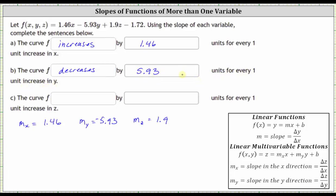And then finally, for part c, we want to know if the curve increases or decreases by what amount in units for every one unit increase in z, which means we are now concerned about the slope in the z direction, which we know was 1.9. So because the slope is positive, the curve increases by 1.9 units for every one unit increase in z.